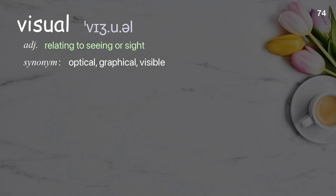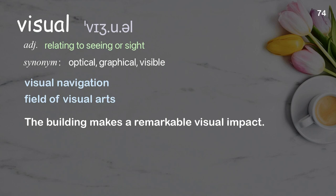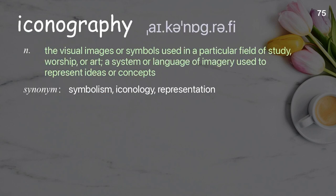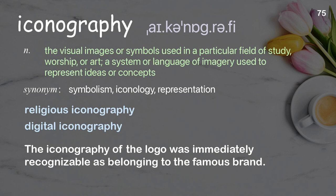Visual. Relating to seeing or sight. Examples: visual navigation; field of visual arts. Iconography: ideas or concepts represented through images or symbols. Examples: religious iconography; digital iconography. The iconography of the logo was immediately recognizable as belonging to the famous brand.